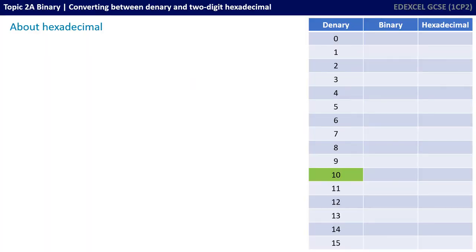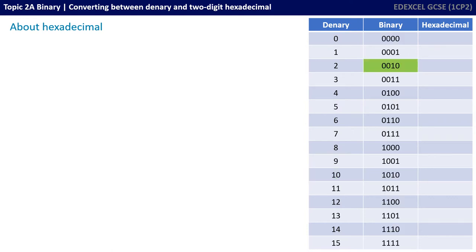We've already learnt that the denary system is a base 10 system — we only have the symbols 0 to 9, and when we want a 10, it's a 1 and a 0. We've also learnt that the binary system is a base 2 system, so we only have the numbers 0 and 1, and if we want a 2, it's 1 and 0.